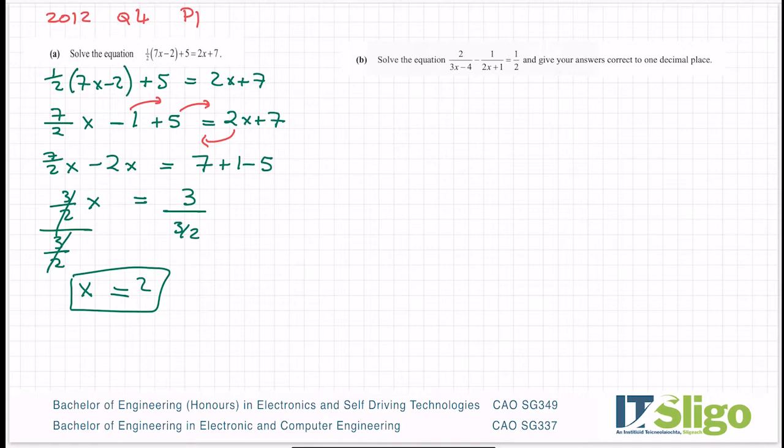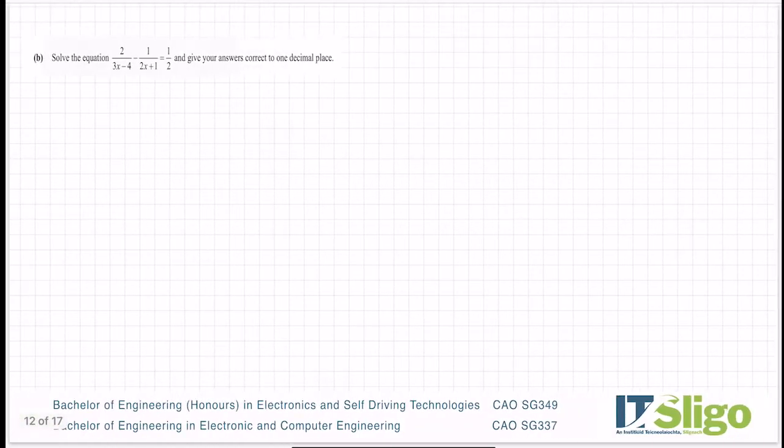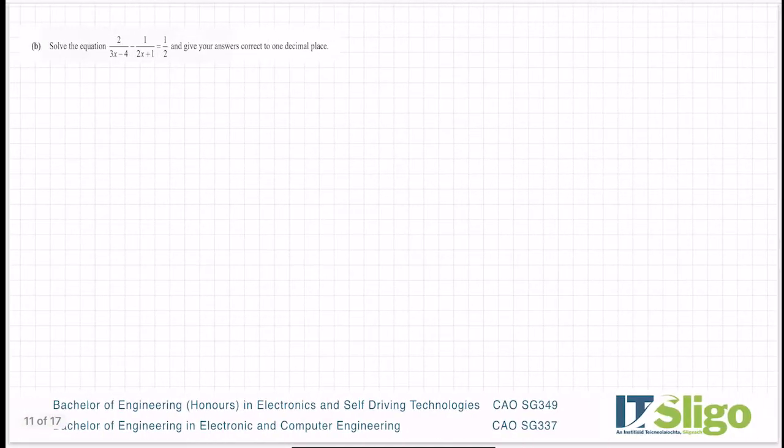Part B then of that question was an algebraic fraction. There's two ways that it's commonly taught in school, so I'm going to do it both ways and then you can choose your preferred method. So all I've done is literally copied that question onto this page and this page to give us a bit more space. The first method is to get a common denominator of it all. So your common denominator is all the bottoms multiplied by each other.